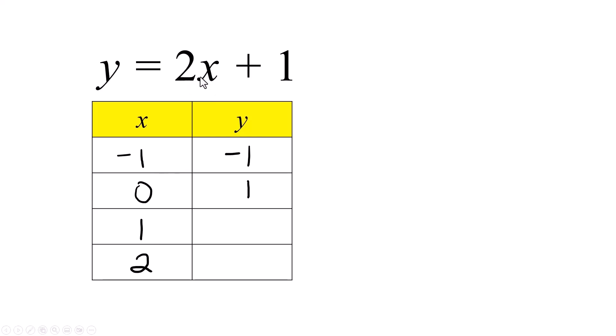One. Two times 1 is 2. Two plus 1 is 3. And 2, 2 times 2 is 4, and 4 plus 1 is 5.